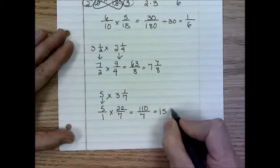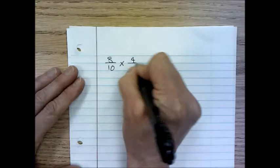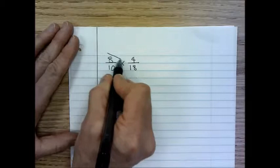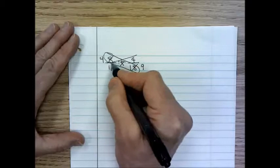All right. Let's do one more, one or two more problems and practice some of that cross-cancelling. So if we have eight-tenths times four, let's make this four-eighteenths, all right, just for practice purposes. We can reduce our eight and our eighteen if we divide by two. This would become a four. This would become a nine. We can cross-reduce our ten and our four by dividing by two.